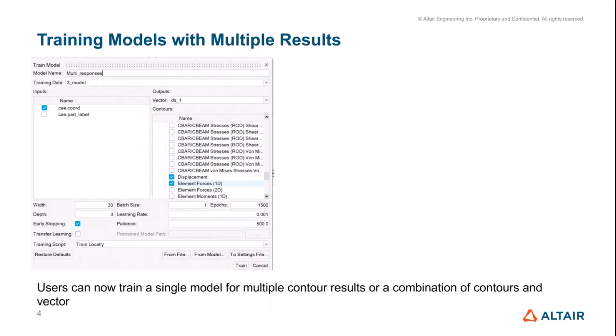Not only can we combine different contours together — for example, you can have one model train and predict on both displacements and stresses — but you can also combine a vector and a contour. A vector in this case could be used for KPI prediction: custom results which are not originally part of the simulation file, but a Physics AI model can learn to predict both types of results.